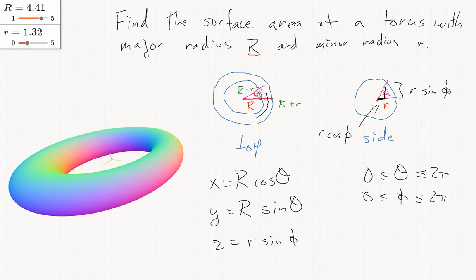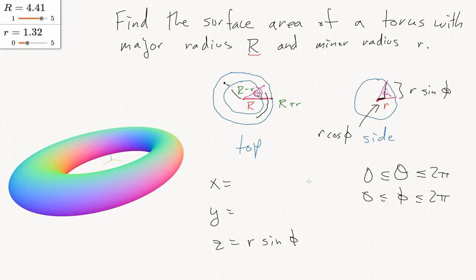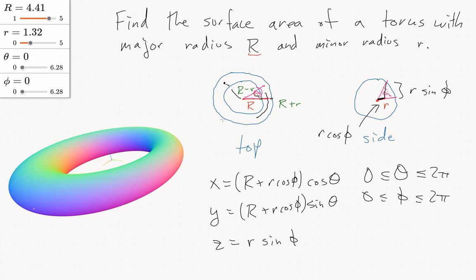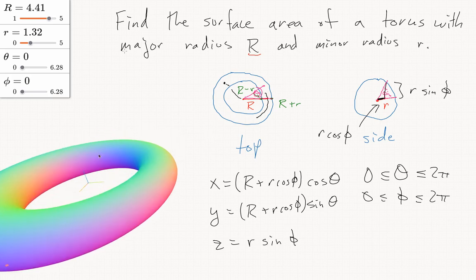The radial distance adjustment is r cos phi. If we were at a point on the central circle, we move outward along the radius direction by r cos phi. So we need to adjust the formula: x becomes (big R plus little r cos phi) cos theta, and y becomes (big R plus little r cos phi) sine theta. So now we have a complete parametrization T(theta, phi).